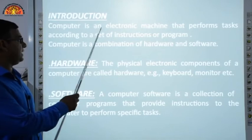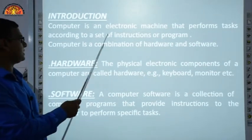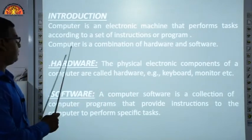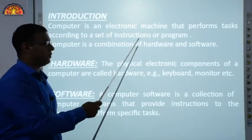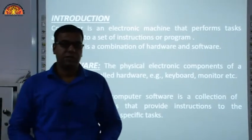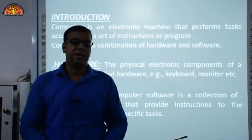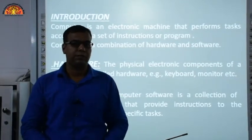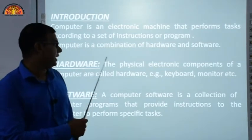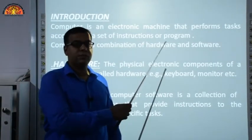A computer is an electronic machine that performs tasks according to a set of instructions or programs. A computer is a combination of hardware and software. It is a machine that works with predefined instructions. A computer is mainly made up of two parts: hardware and software.